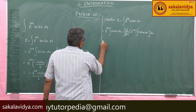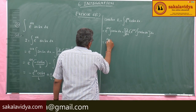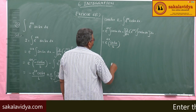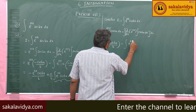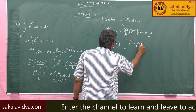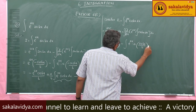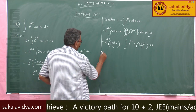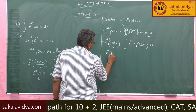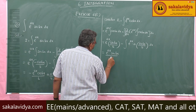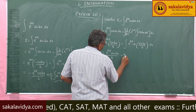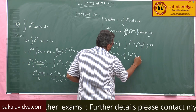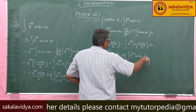Now, e power ax sin bx by b minus e power ax, this is e power ax sin bx by b, again a by b common, minus a by b times integral e power ax sin bx dx. Again, the same problem has reoccurred.